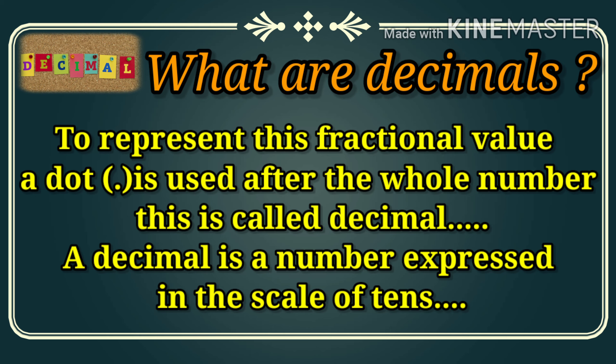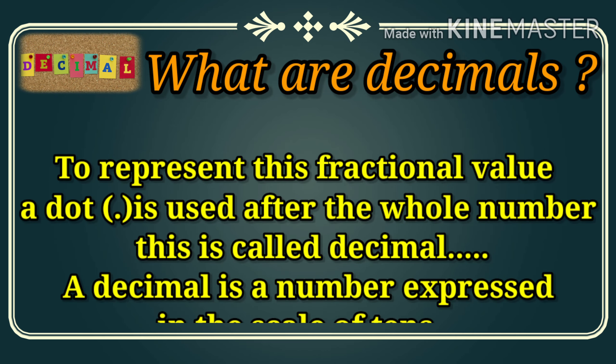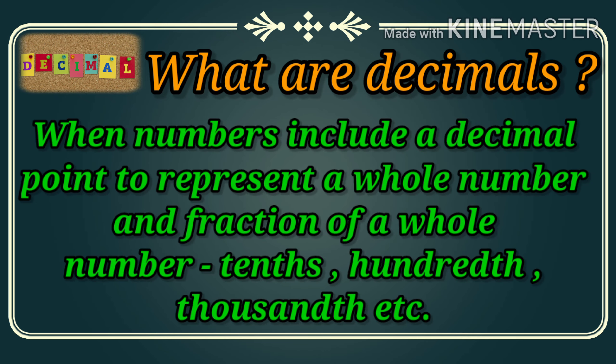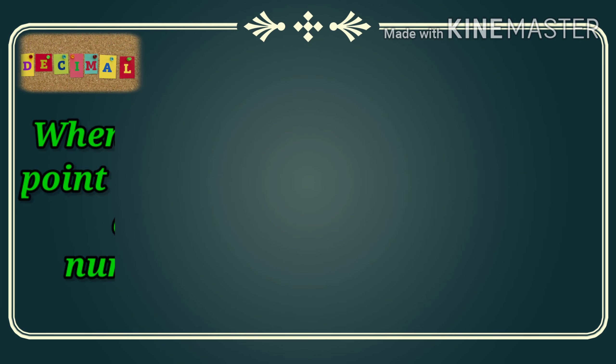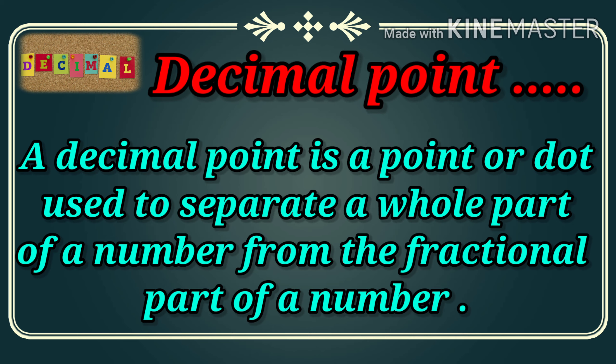Let us have a quick review of what we have studied earlier about the decimal. A decimal is a number expressed in the scale of tens. We talk about decimals when numbers include a decimal point to represent a whole number plus a fraction of a whole number, like tens, hundreds, thousands, etc. A decimal point is a dot used to separate the whole part of a number from the fractional part of a number.